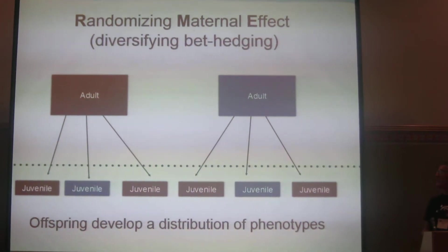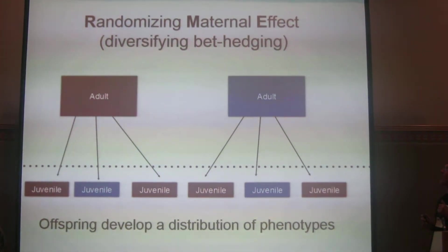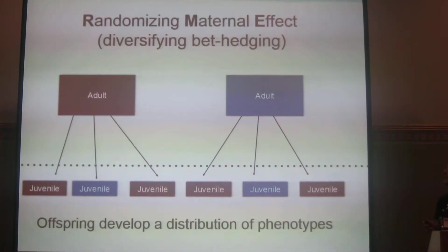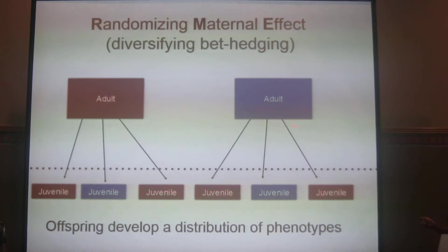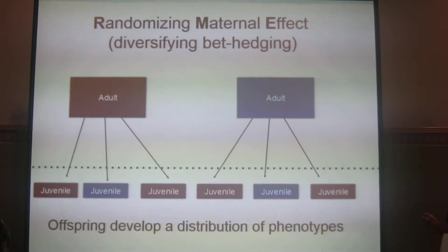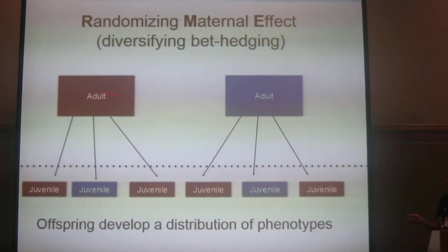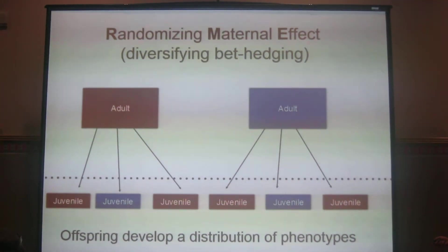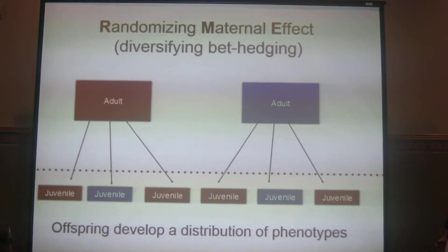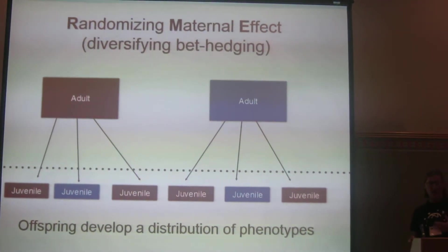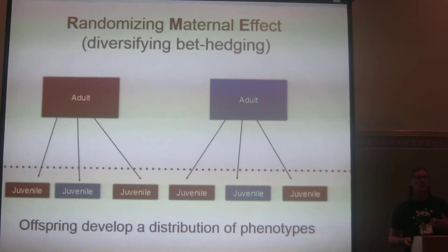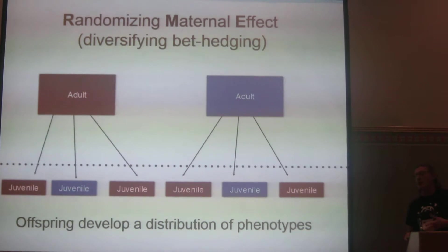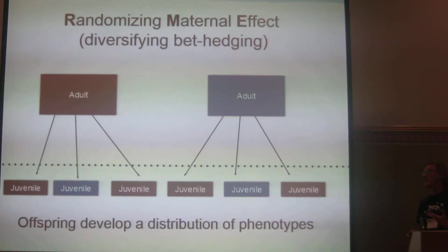Here's another possibility: the idea of randomizing offspring, also often known as diversifying bet hedging. This slide has a single genotype. The genotype has a strategy which is that, regardless of the parental phenotype, they produce two-thirds red and one-third blue offspring. In the next generation, the blue ones will go on and produce two-thirds blue offspring. This could happen either because parents do something to provide cues or resources to offspring, or because of some developmental trajectory that's inherently stochastic.